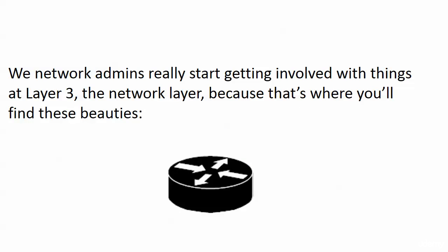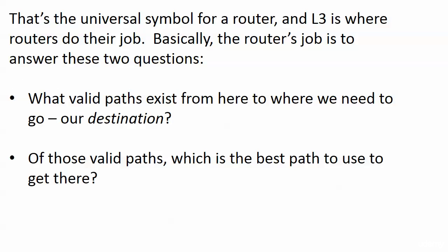I have a special section on TCP and UDP later in the course. We will definitely be revisiting them, and we're going to be working with this a lot, because we're now at layer three, the network layer. That's where we find the universal symbol for a router — a round cylinder type shape with four arrows on top. Layer three is where routers do their jobs, and very basically, the router's job is to answer two questions: what valid paths exist from here, the local router, to our destination? And of those valid paths, which is the best path to use to get there?